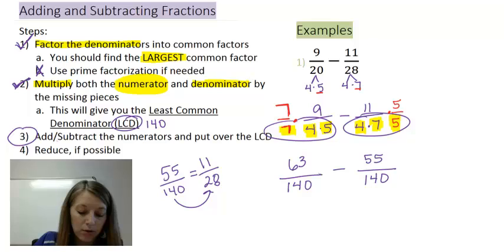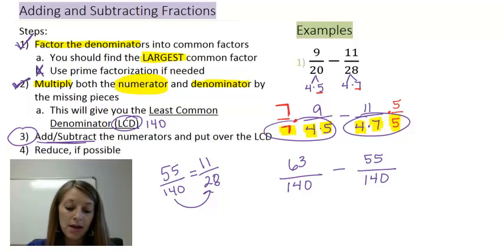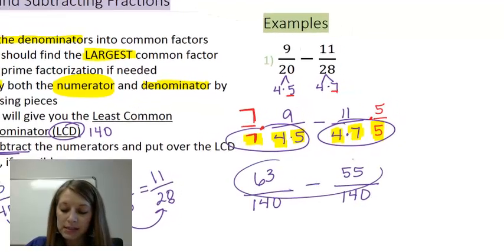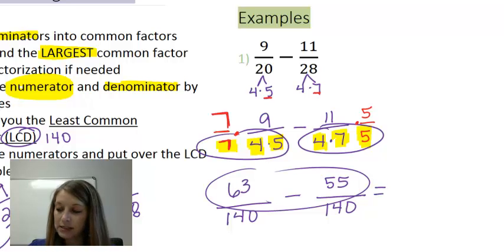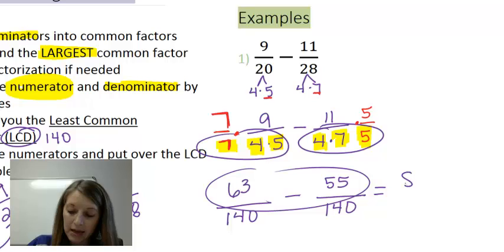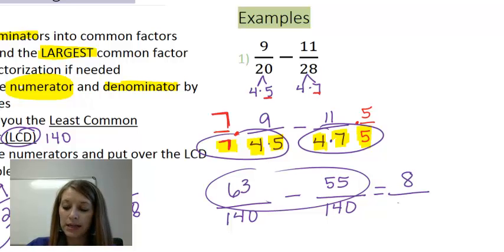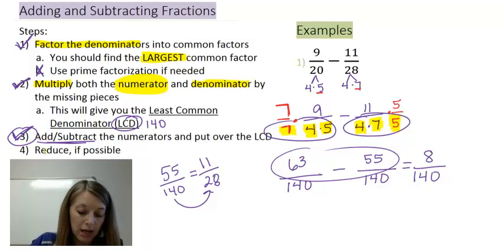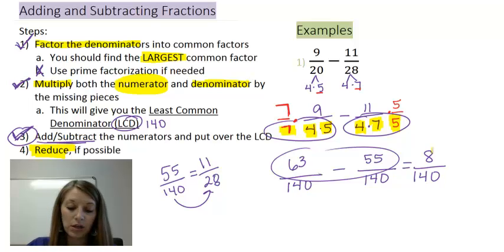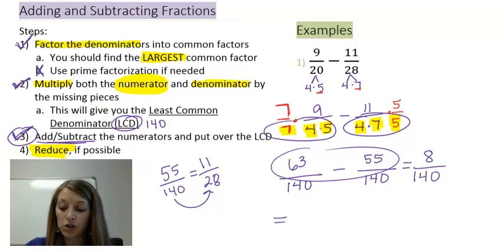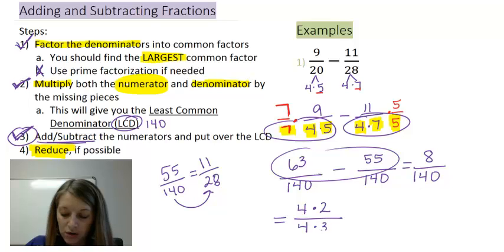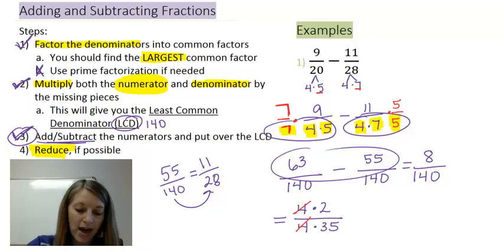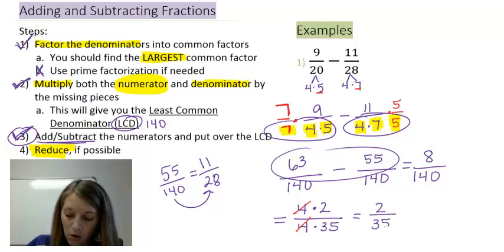Now I'm on to step number 3, which means I actually get to put these fractions together. I take 63 minus 55, which gives me 8, and I put it over the denominator of 140. For the last step, I need to reduce. I notice that 4 goes into both 8 and 140 evenly, so I write 8 as 4 times 2 and 140 as 4 times 35. Canceling the 4s gives me my final answer: 2 over 35.